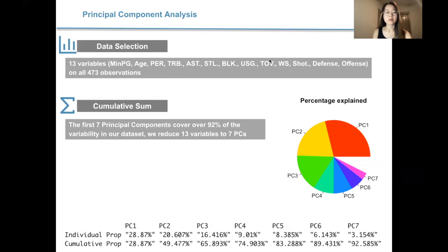An inherent similarity between these variables is that they all measure the on-court performance of a player, so there is a high correlation between all of these variables, so we can produce latent variables using principal component analysis. And then we can see that the cumulative sum of the first seven variables cover about 92% of the variability in our dataset. So in this case, we reduced 13 variables to seven principal components. We can also see that it's evident in the pie chart on the right that seven PCs can explain above 90% of the variability.